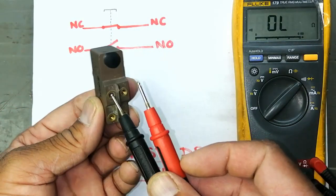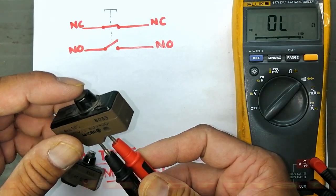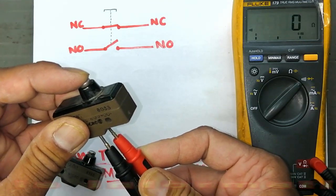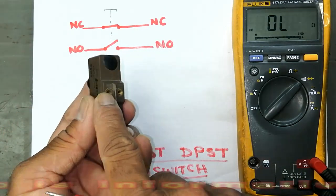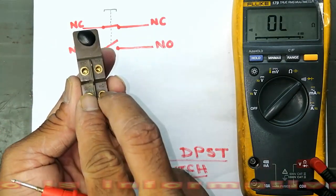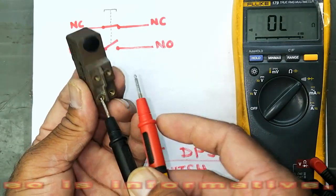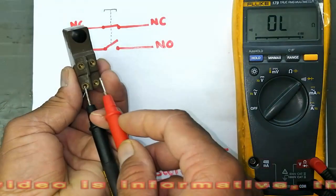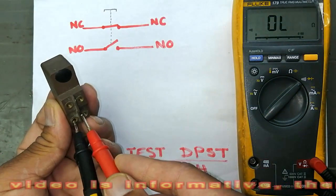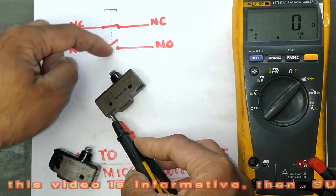In normal condition this one is open. When I press, these are opposite to each other. When this will close, this will open. When this opens, this closes. Like this. Now it is working like this. When I press this one...